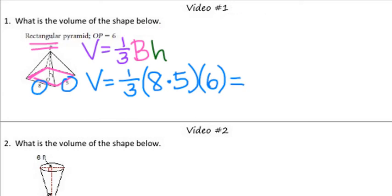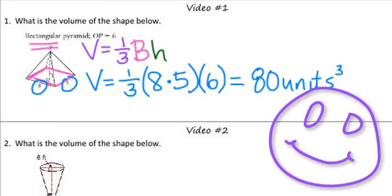And we can calculate this, one-third times 8 times 5 times 6, and we get 80 units cubed. And there you have it.